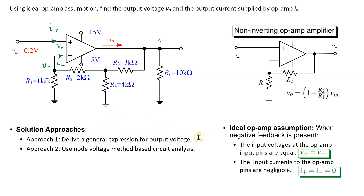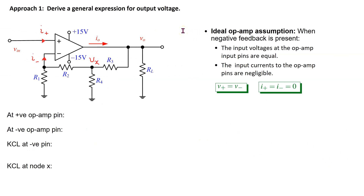There are two main ways to solve this circuit, and in this video we will see both approaches in action. The first approach is based on deriving a general expression for the output voltage in terms of the input voltage and resistors. To do this, we ignore the values of the components and use the ideal op-amp assumption in conjunction with the node voltage method. Node voltage method is covered in other videos in this channel, and a link is provided at the end of this video.